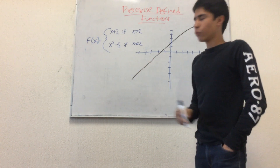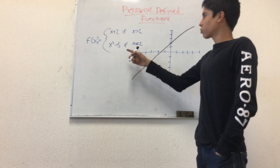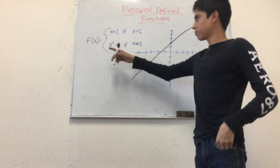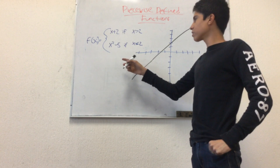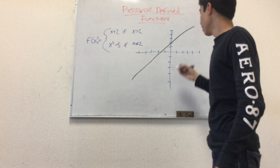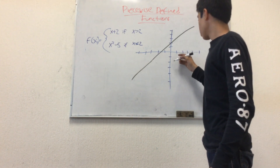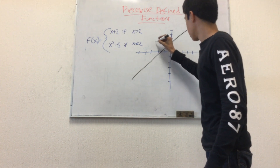Then we graph the next one, which is f of x equals x squared minus 5, and this one goes like this.